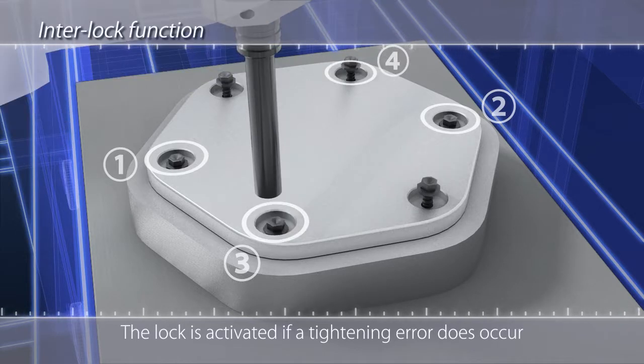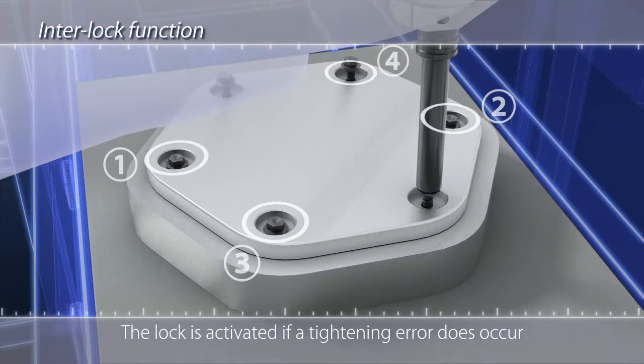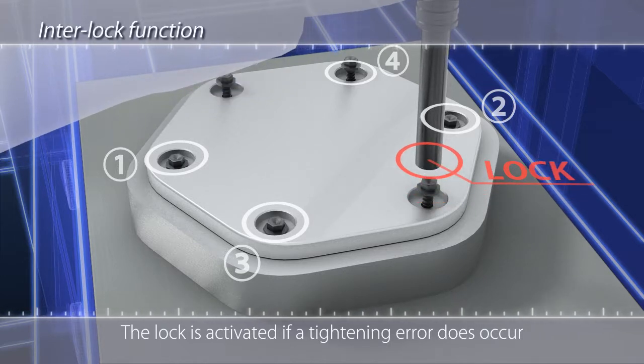There is also an interlock function to further prevent errors. If an error in the tightening sequence or double tightening does occur, the lock is activated to stop the process.